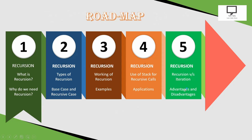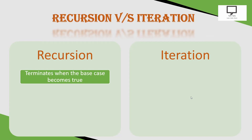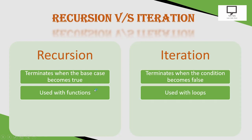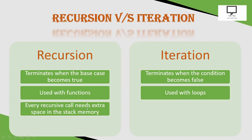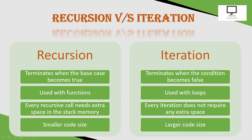Now let's move forward to the comparison between recursion and iteration, followed by advantages and disadvantages of recursion. Recursion terminates when the base case becomes true, while iteration terminates when the condition becomes false. Recursion is used with functions, and iteration is used with loops. Every recursive call needs extra space in the stack memory because it utilizes the implicit stack, whereas iteration does not require any extra space. The advantage of recursion is smaller code size, while iteration results in a larger code size.